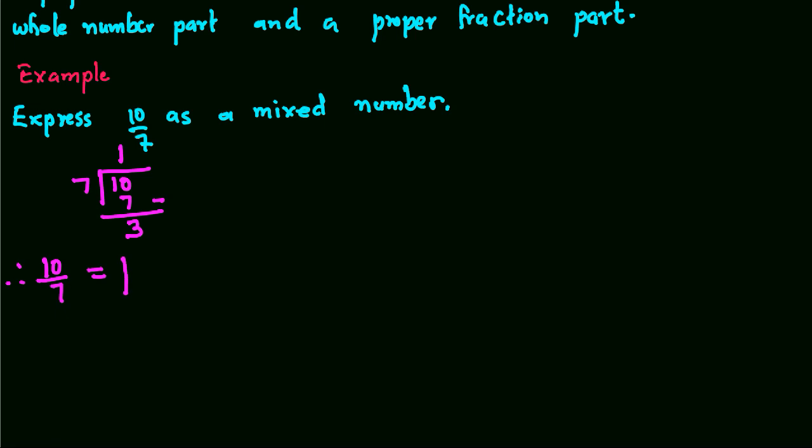So we have the whole number part which is 1, and the proper fraction part which is 3/7.